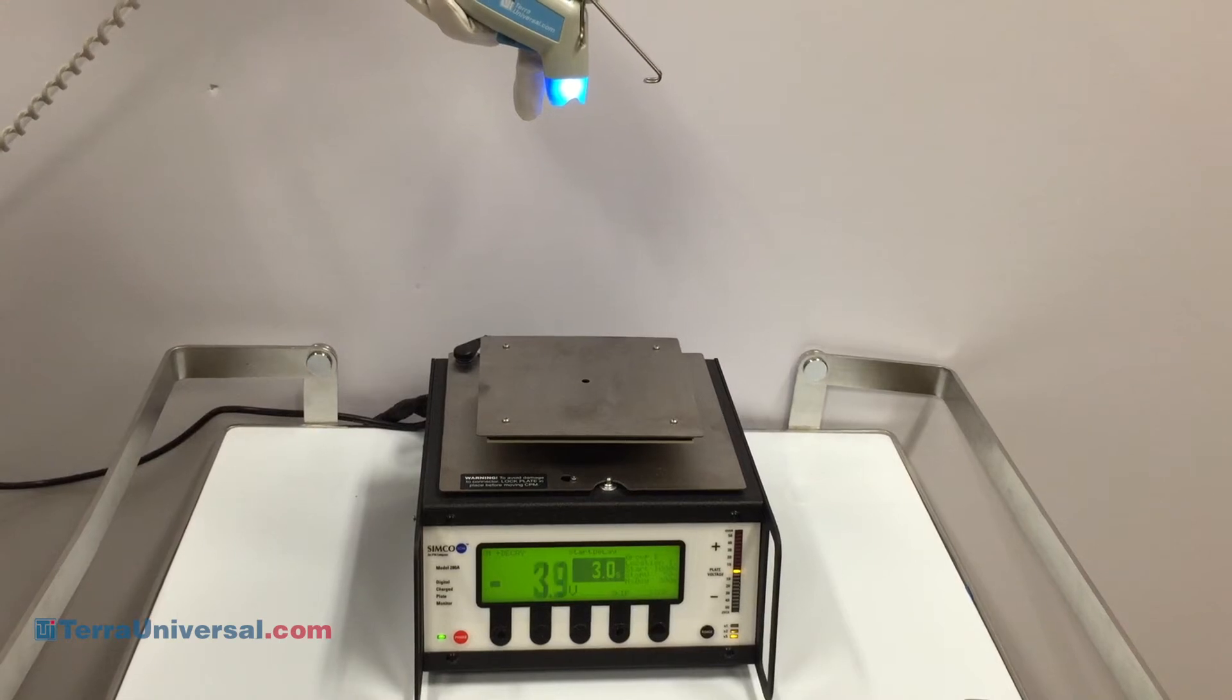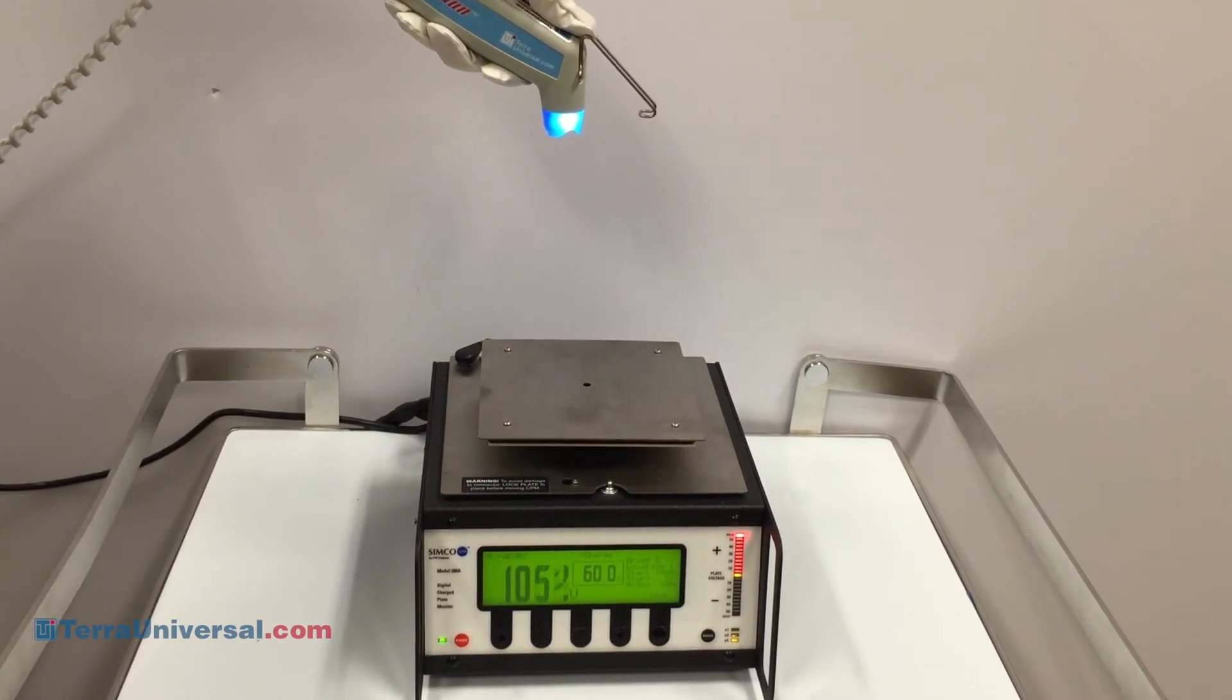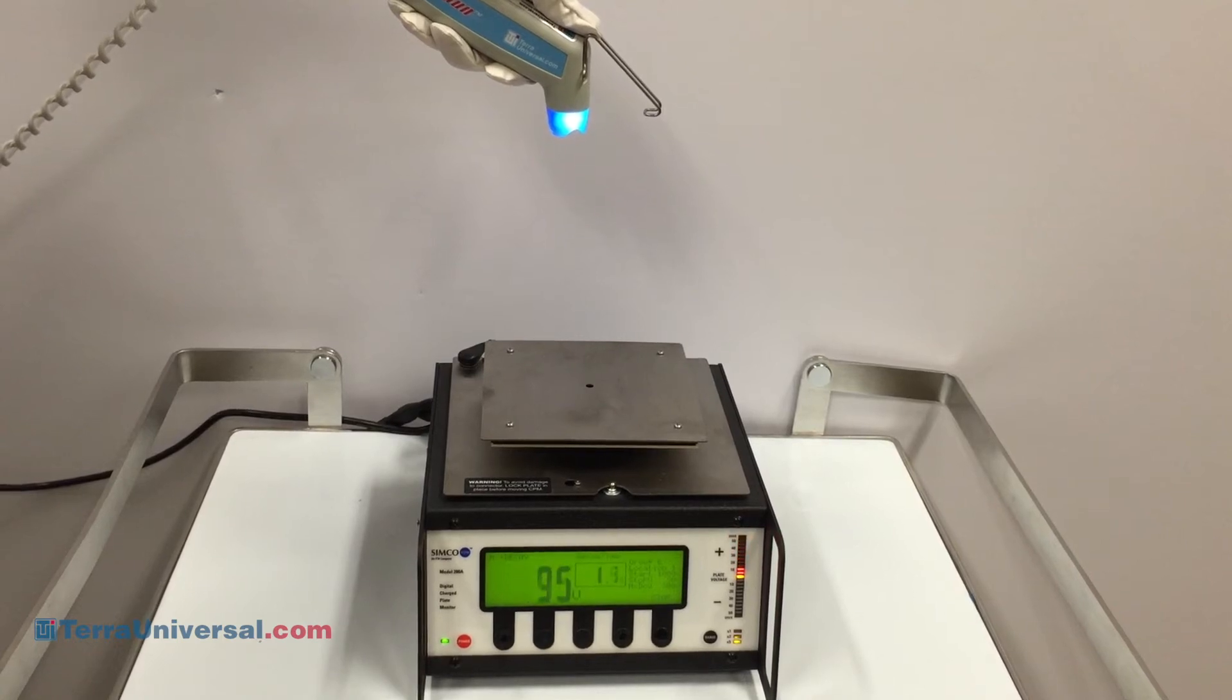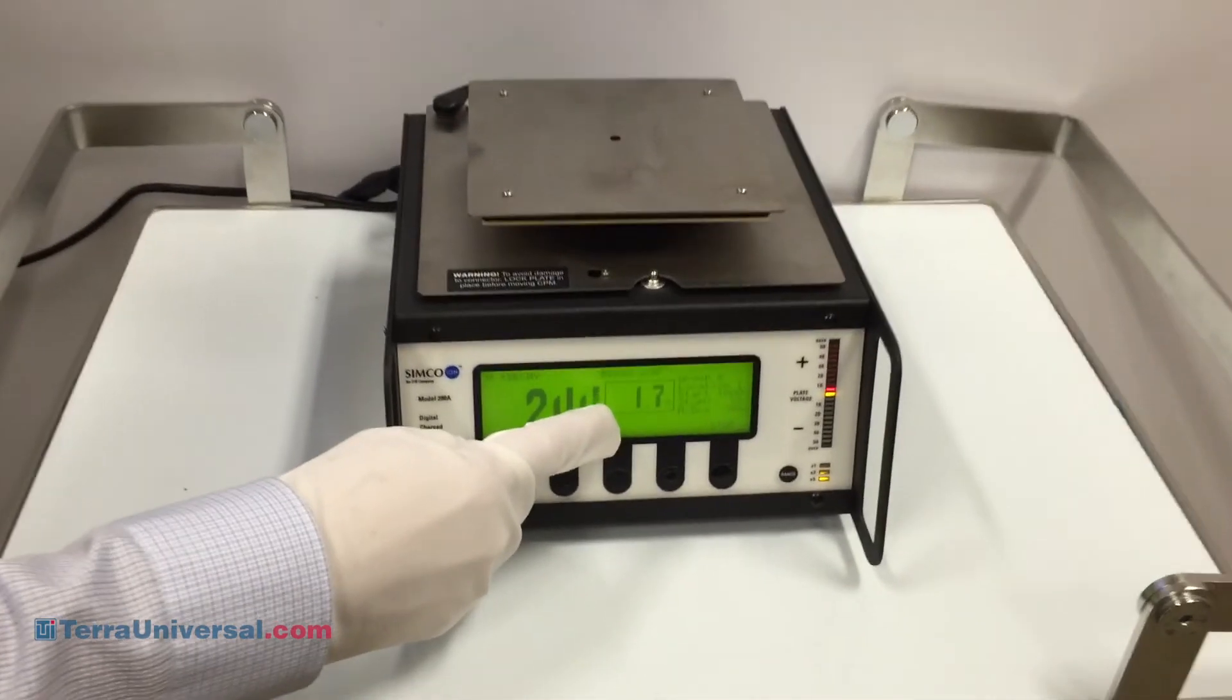With the ionizing gun engaged, we measure the time it takes for the positive charge to drop below 50 volts, also known as a static decay test. Our result? 1.7 seconds.